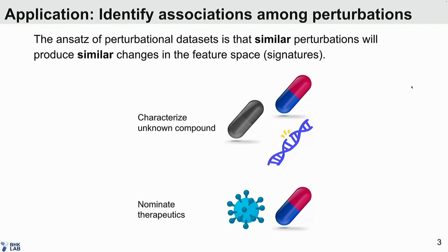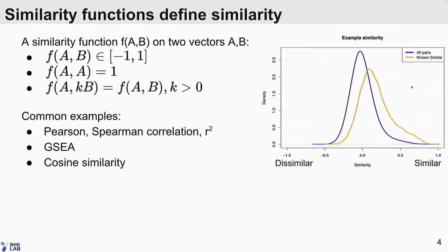But it's not obvious what similarity means. Similarity is defined by a function — a similarity function — which is related to a distance function. It takes two vectors, and those vectors which are similar, close to each other, are given a score close to one. And if they're dissimilar, their score would be zero or minus one. Some canonical examples are things like Pearson and Spearman correlation, gene set enrichment analysis, or cosine similarity. Similarity functions are used for all sorts of analyses, like clustering and model fitting.